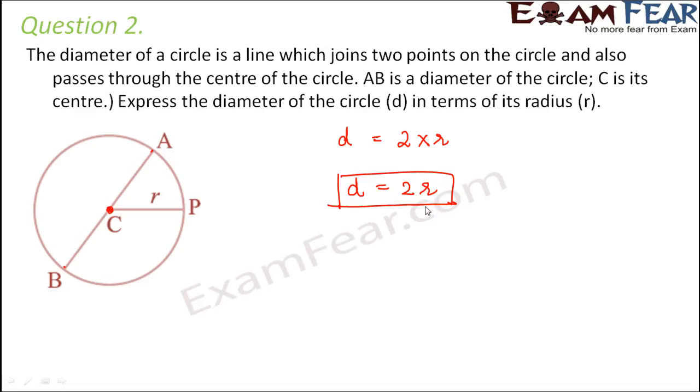Now as the radius keeps changing, like if the value of the radius is 2cm, then diameter becomes 4cm. If radius is 10cm, then diameter becomes 20cm. So as R keeps changing, D also keeps changing.